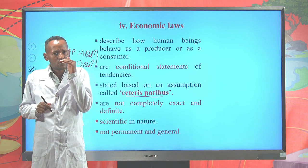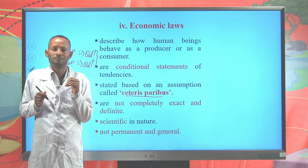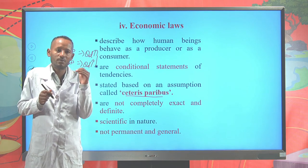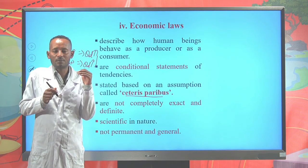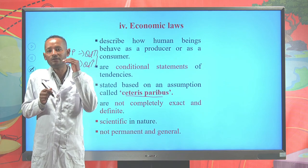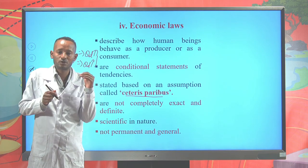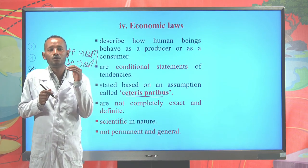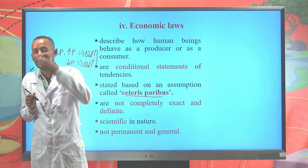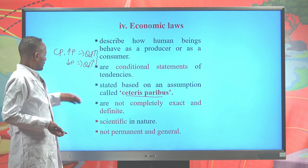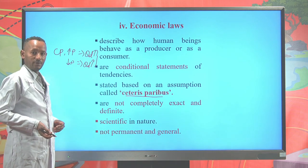This holds true if there is no change in the consumer's income. But if income increases — for example, from 10 to 1 million birr — then with an increase in egg price from 2 to 5 birr, you can still buy more eggs, which is against the law of demand. So, economic laws are written based on the assumption of ceteris paribus.